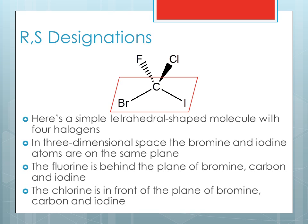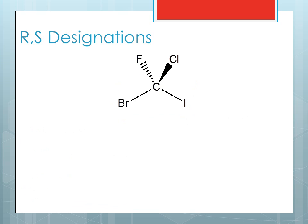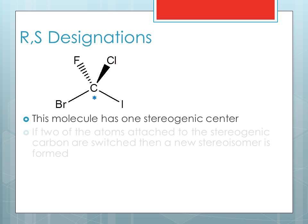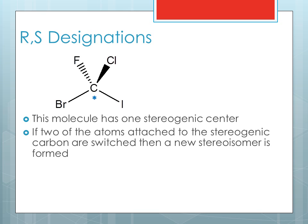And the chlorine is in front of the plane of bromine, carbon, and iodine, indicated here with a solid wedge. This molecule has one stereogenic center, typically shown with an asterisk. If the two atoms attached to the stereogenic carbon are switched, then a new stereoisomer is formed.